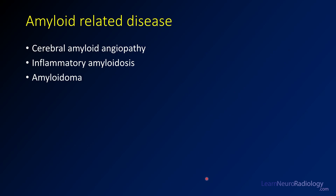Today, we're going to talk mainly about amyloid-related disease, specifically cerebral amyloid angiopathy, or CAA. That's the most common intracranial amyloid that you're going to see, and that's what people are often referring to if they ask you about CNS amyloid. A less common manifestation is inflammatory amyloidosis, which is similar to CAA, but you often have more of a flare component and more edema. And finally, we'll finish up with an amyloidoma, which is a rare tumor-like condition in which amyloid is deposited in the brain almost as a mass.